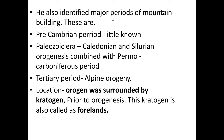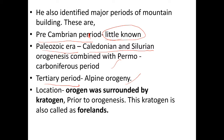Kober also identified major periods of mountain building: the Pre-Cambrian period, the Paleozoic era, and the Tertiary period. During the Paleozoic era, the Caledonian and Silurian orogenesis combined with the Permo-Carboniferous period. The Tertiary period corresponds to the Alpine orogeny — for example, the Himalayas were formed during this Alpine orogeny.